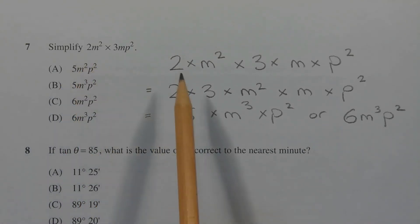Now 2m squared means 2 times m squared, and 3m p squared means 3 times m times p squared. So the expression can be written as 2 times m squared times 3 times m times p squared.